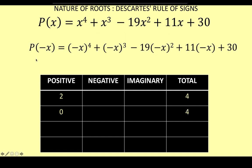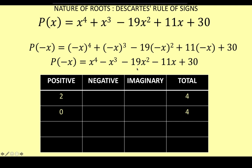For the negative real roots, we find P(-x) — that means replace the variable x with negative x and simplify. P(-x) is now equal to x⁴ - x³ - 19x² - 11x + 30. A faster way of getting P(-x): whenever you have an even exponent, just copy that term; when you have an odd exponent, change the sign of that term. Then let's count the number of sign changes: from positive to negative is one sign change; from negative to negative is no sign change; negative to negative is no sign change again; from negative to positive is one sign change. So we have a total of two sign changes of f(-x).